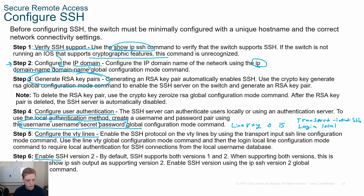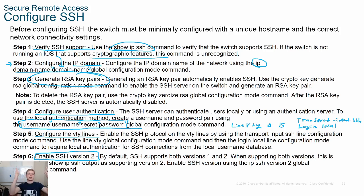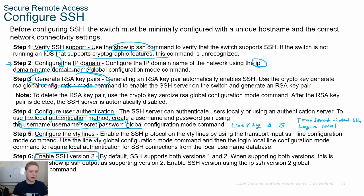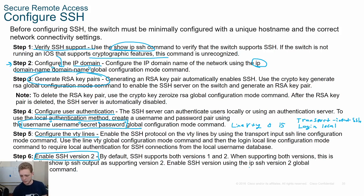Enable SSH version 2. By default, Cisco supports both version 1 and 2 and sets it to version 1.99 — which is a bit odd. Other vendors default to SSH version 2 only. Make sure to type the command 'ip ssh version 2' in global configuration mode to explicitly set version 2.